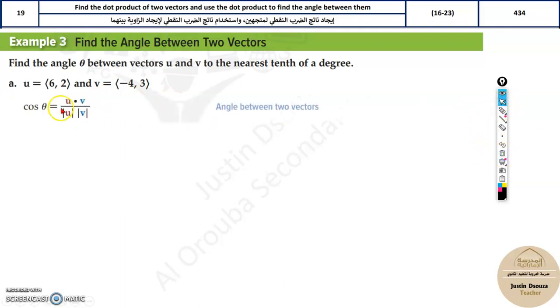The formula is cos theta equals u dot product v divided by the magnitude of u multiplied with the magnitude of v. So what this means is very simple.